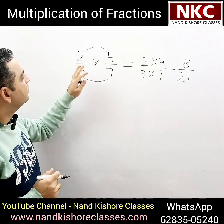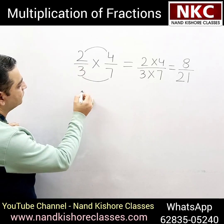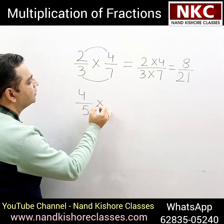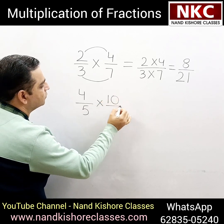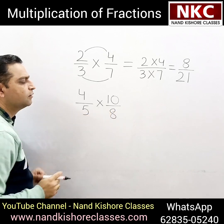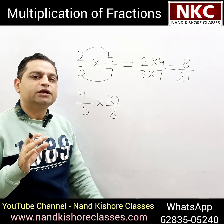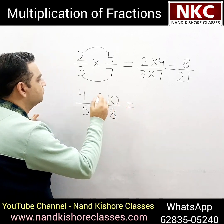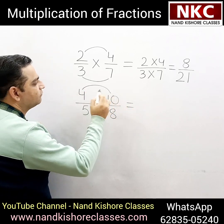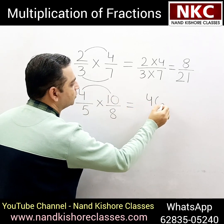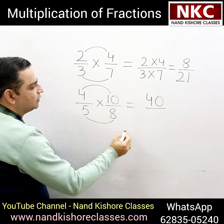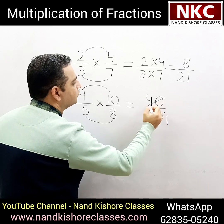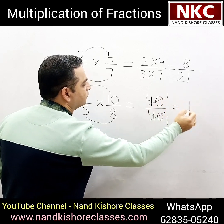Now let's suppose the next question is 4 over 5 multiply 10 over 8. According to the rule we have studied, you can apply that. When 4 and 10 are multiplied it becomes 40, and when 8 and 5 are multiplied you get 40. Then you can cancel 40 with 40 and your final answer will be 1.